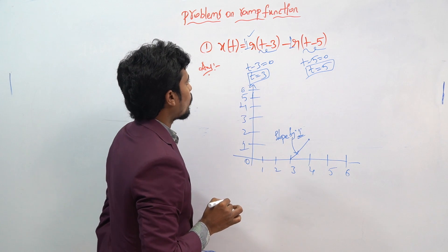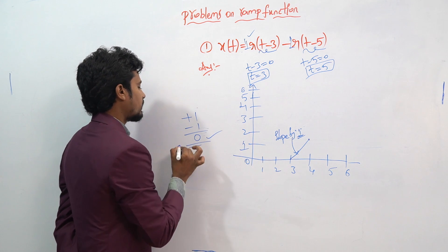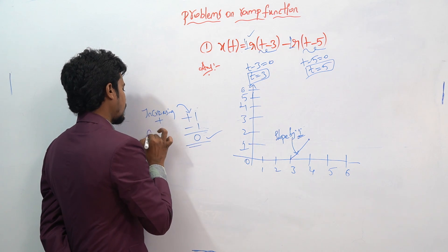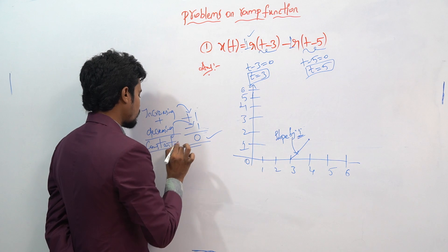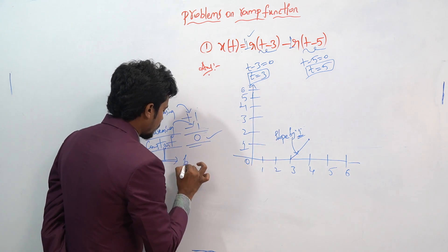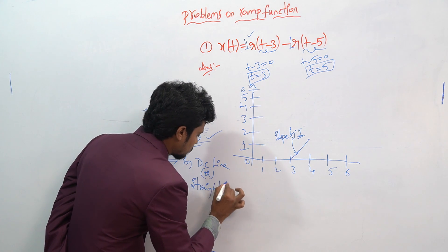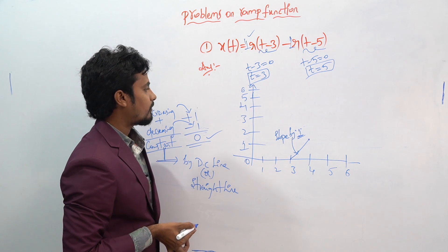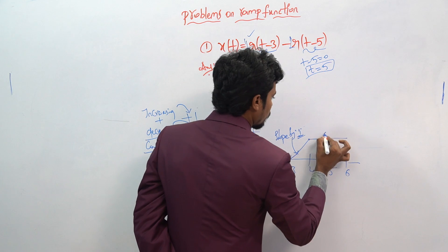Next, at t equal to 5 we have plus 1 slope and minus 1 slope, giving 0. That means when you are increasing plus decreasing, you get a constant value. A constant is represented by a DC line or straight line. After t equal to 5, the value becomes constant.